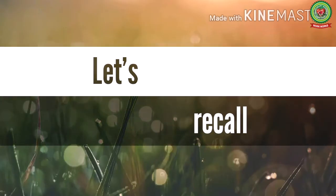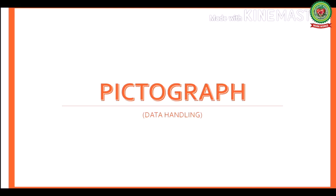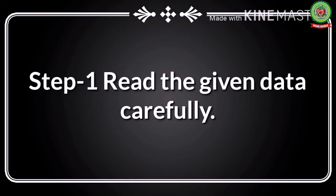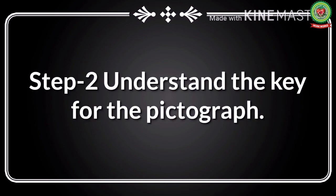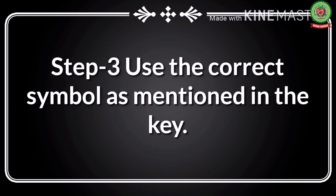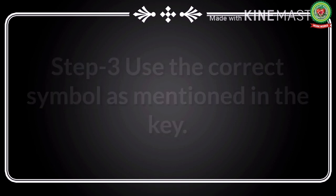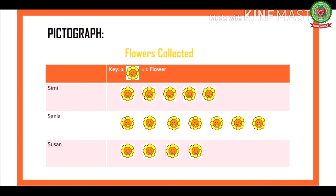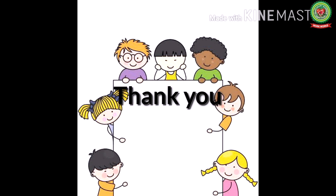Let us recall what we have learned today. We learned how to draw a pictograph for given data. Step 1: read the given data carefully. Step 2: understand the key for the pictograph. Step 3: use the correct symbol as mentioned in the key. Following these steps, you can draw a pictograph. I hope you have understood how to draw a pictograph using the given data. Now complete the homework that has been given to you. Thank you.